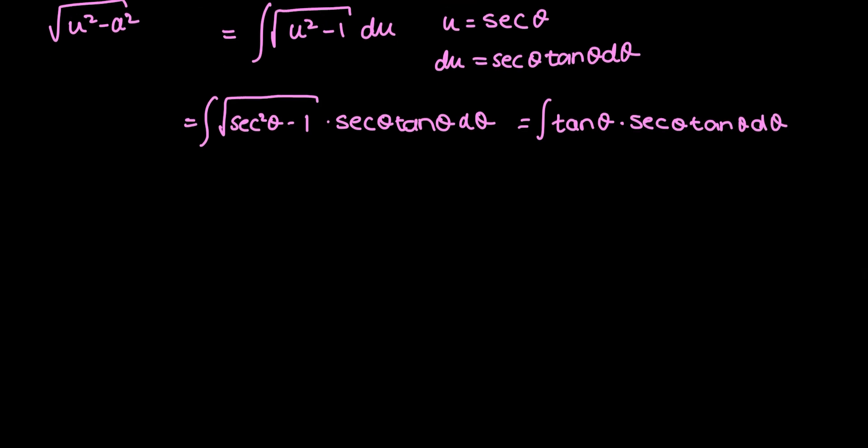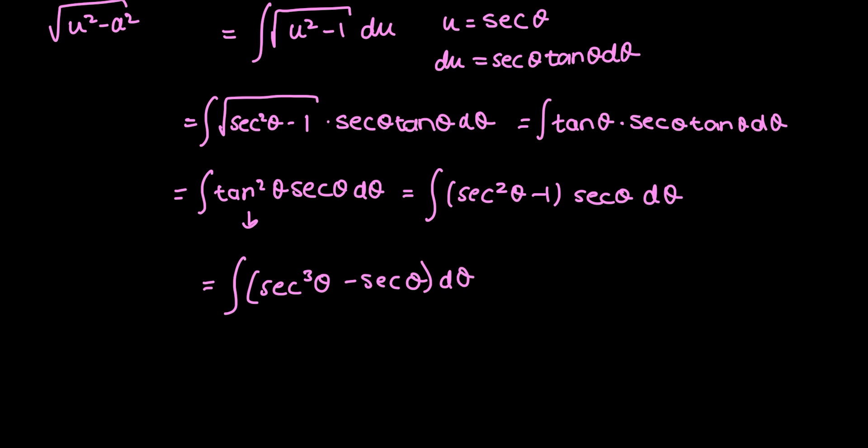And now, joining the two tan terms, I have the integral of tan squared theta secant theta d theta. And I think I'm going to go back again and replace this tan squared theta by secant squared theta minus 1. And so, I have the integral of secant squared theta minus 1 times secant theta d theta. Or, the integral of secant cubed theta minus secant theta d theta.